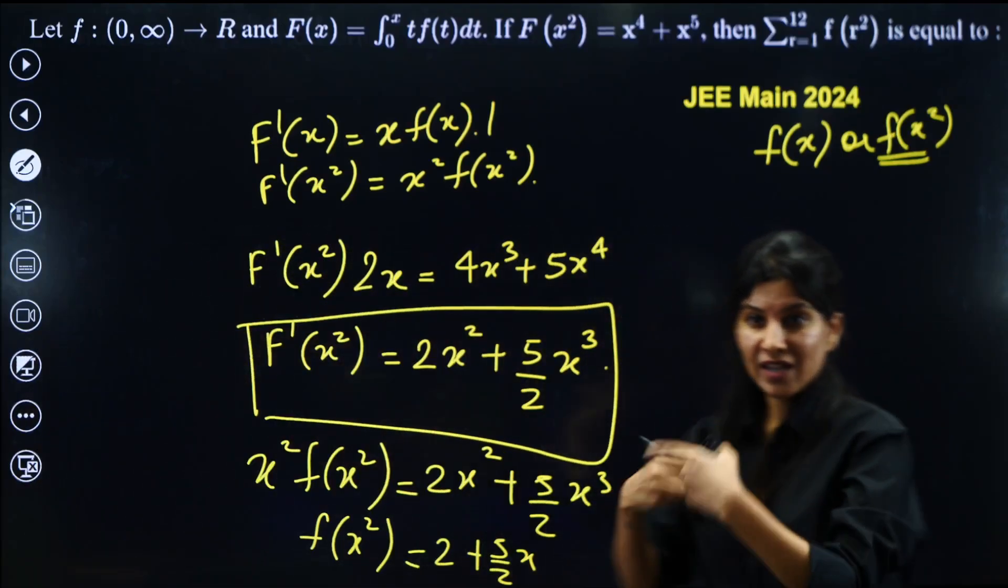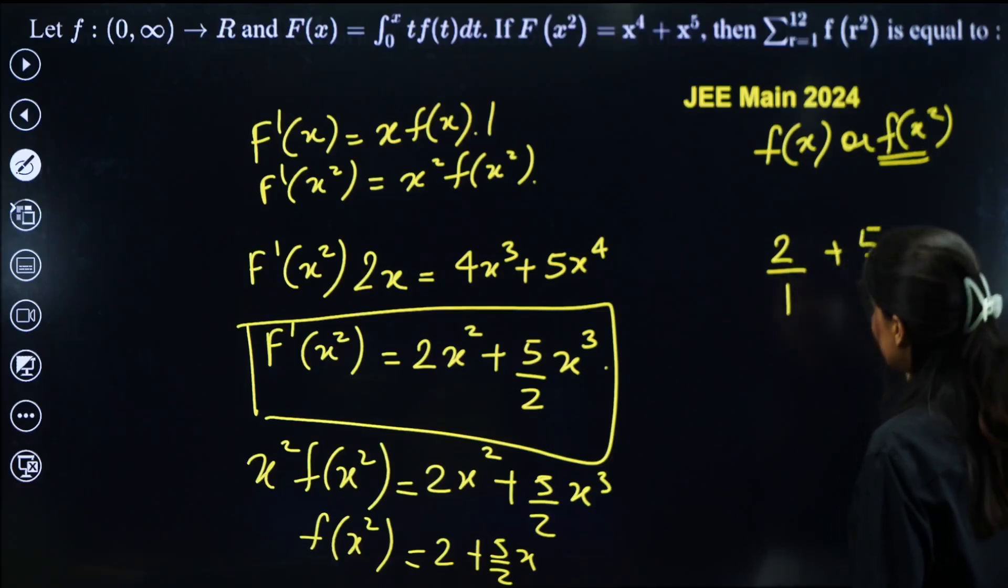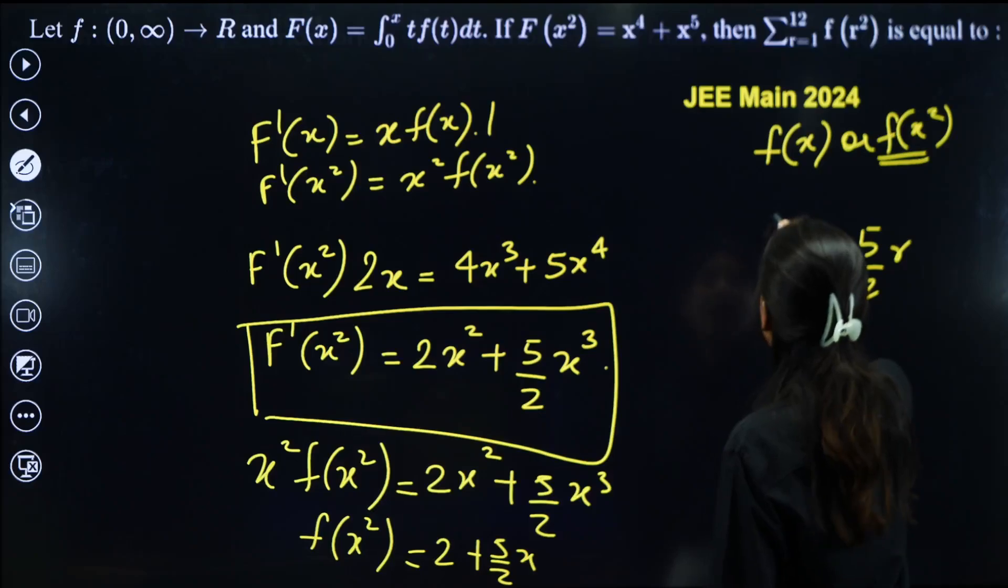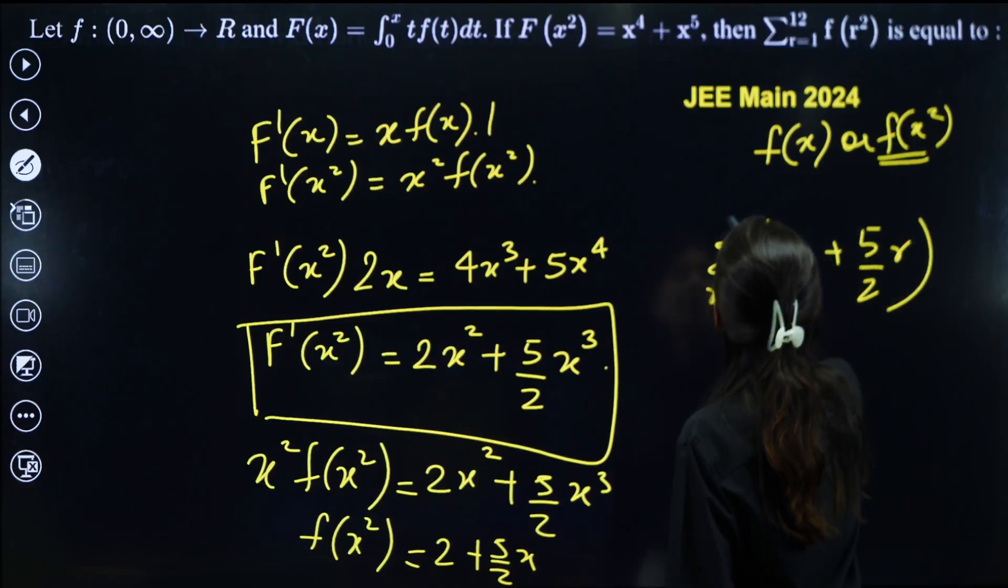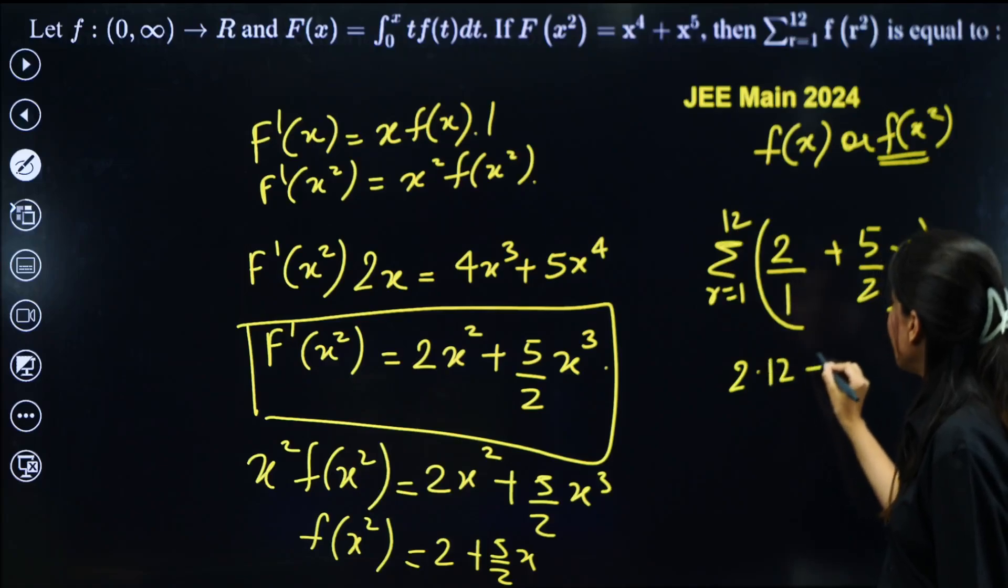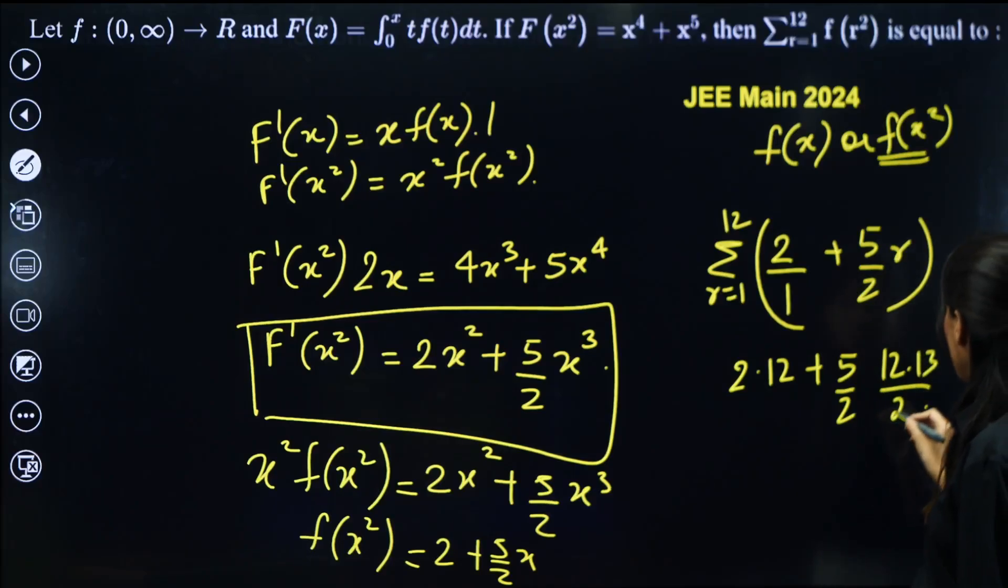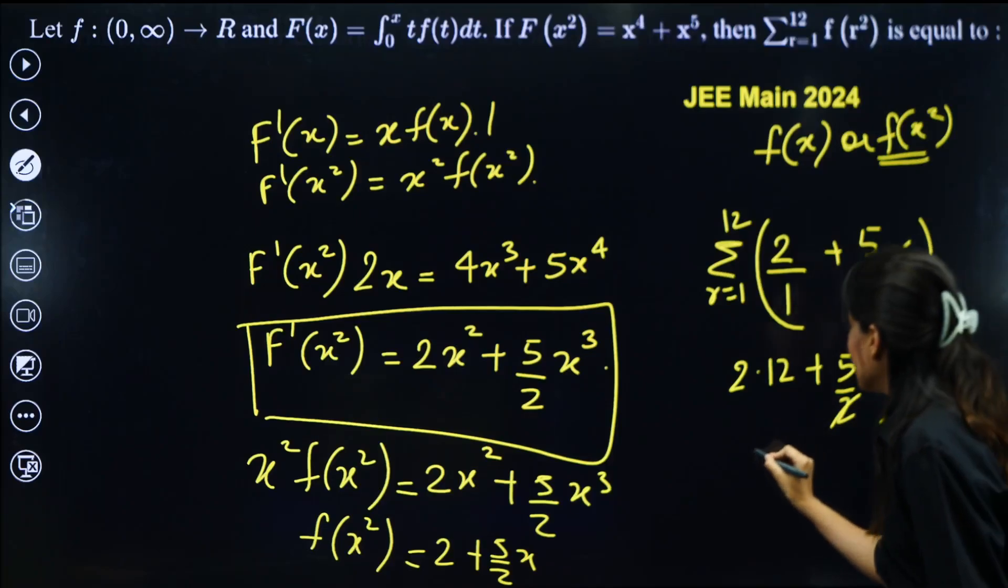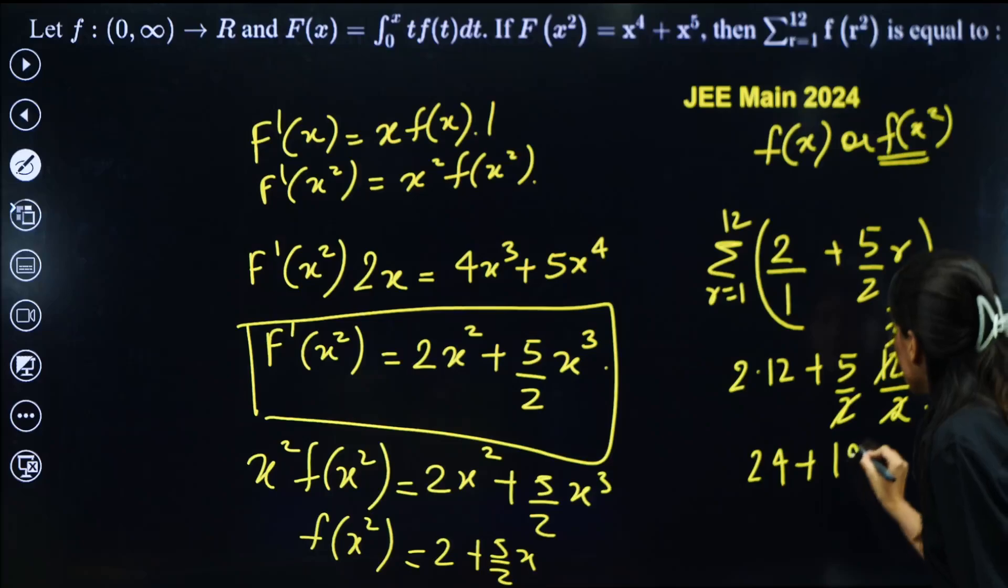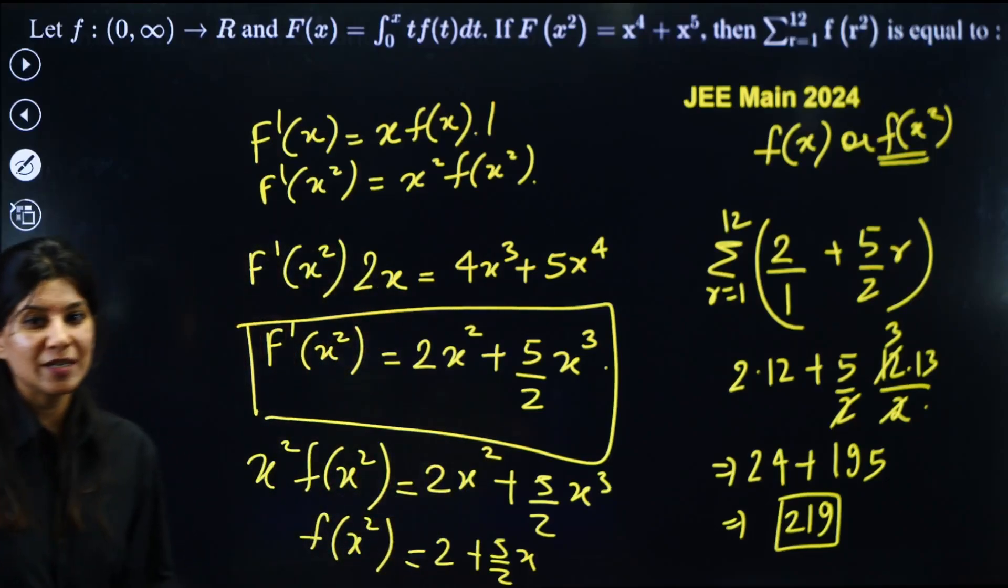So that's what we were looking for. So f(r)^2 will be 2 + 5/2·r. That will be your f(r)^2, and sigma r = 1 to 12, that's what we are looking for. Sigma 2, so 2 times 12 plus 5/2 sigma r. Sigma r is r(r+1)/2. r is 12, 12 multiply 13 by 2. So 24 plus 15 into 13 is 195, and the moment I add it, I will get 219 as the correct answer for this question from JEE Mains 2024.